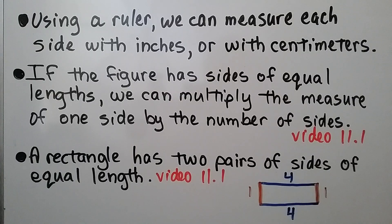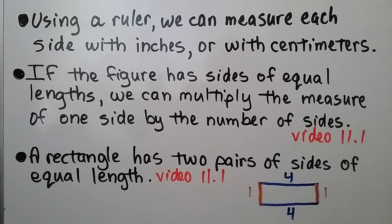Using a ruler, we can measure each side in inches or centimeters. Then we can compare the sum to our estimate. If the figure has sides of equal lengths, we can multiply the measure of one side by the number of sides.